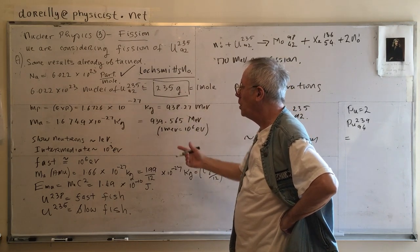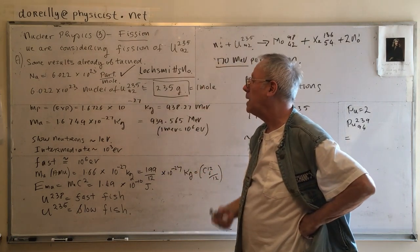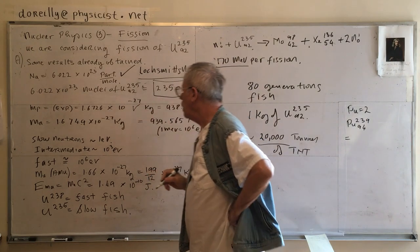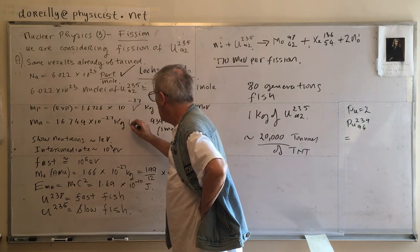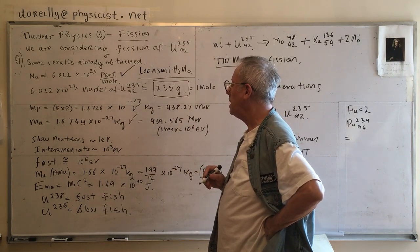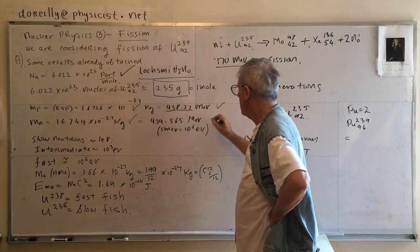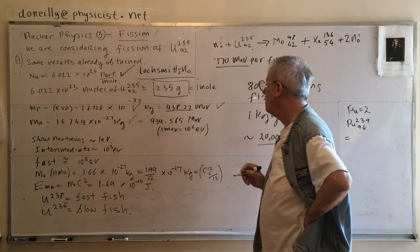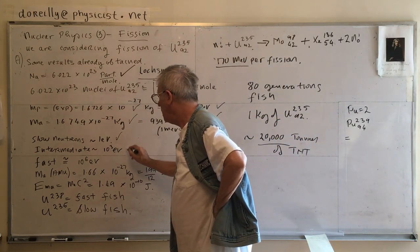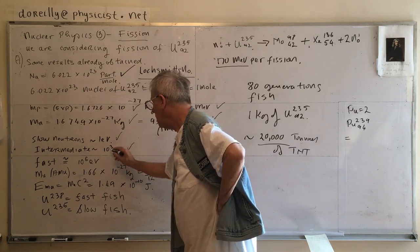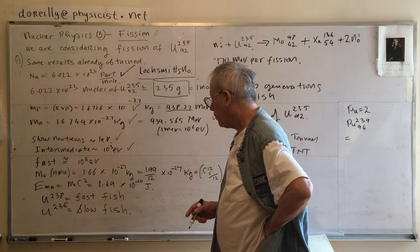We can figure out the energy produced from fissioning one gram: that number times 170 MeV gives the total energy, which we can convert to joules. We carry with us: mass of proton = 1.6726×10⁻²⁷ kg = 938.27 MeV; mass of neutron = 1.6749×10⁻²⁷ kg = 939.565 MeV. Slow neutrons are ~1 eV, intermediate ~10³ eV, fast ~1 MeV.